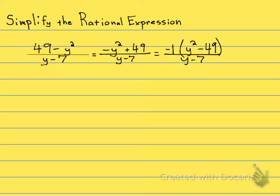Now look at that numerator. This is the difference of two squares, so negative 1 times the difference of two squares. The first two need to give me y squared, so it's gonna be y and y, and the last